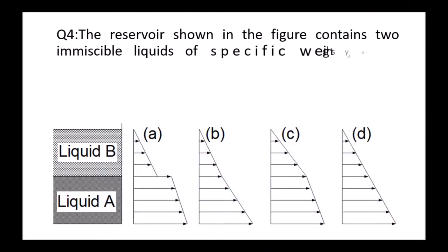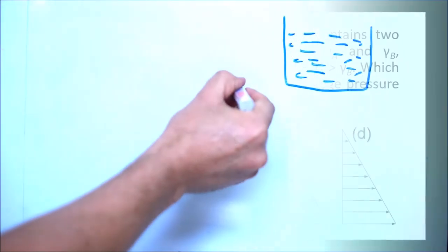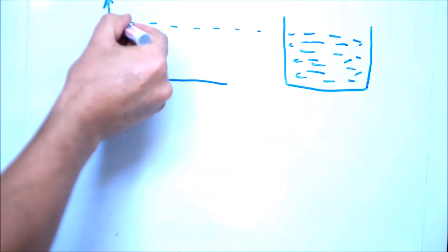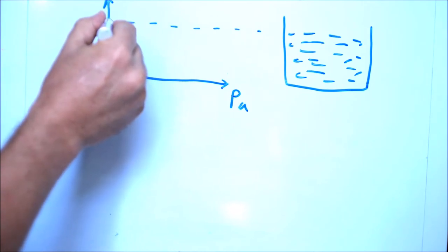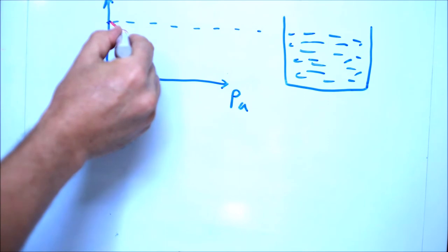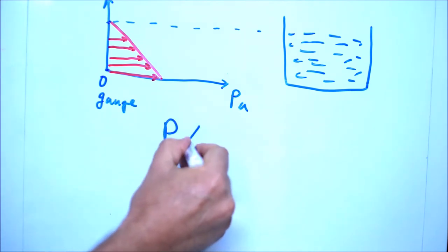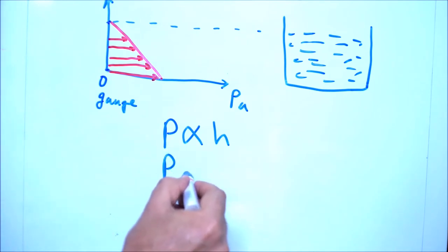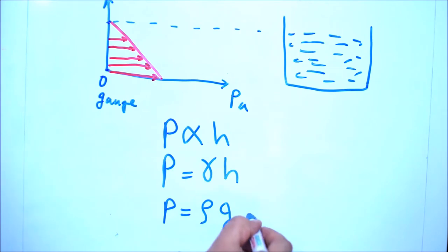Question four: we have two liquids B and A with different specific weights gamma. Gamma A is larger than gamma B, meaning liquid A is denser than liquid B. The question is which diagram accurately represents this case. The diagrams show pressure on the x-axis and height on the y-axis. The surface of the liquid has atmospheric pressure or zero gauge pressure. We can approximate the relation between height and pressure as linear: pressure equals gamma times height. This linear relation is valid for constant density, constant temperature, and constant gravity at limited heights.